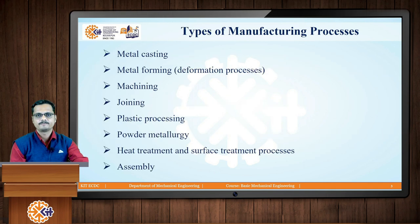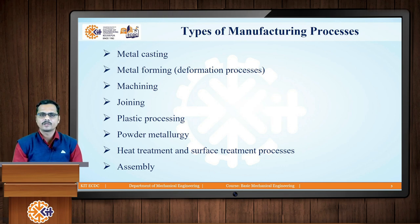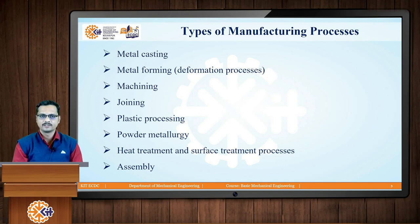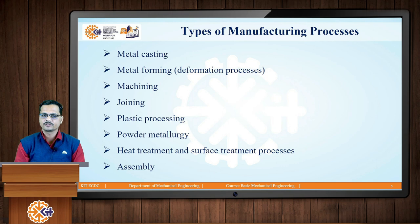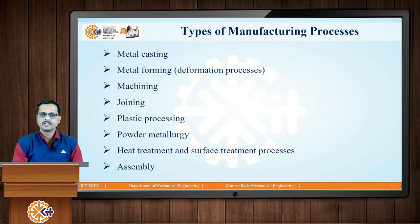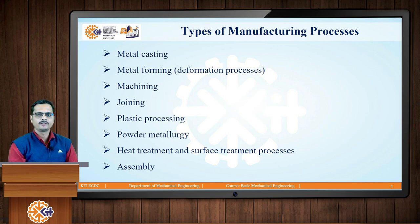After learning the definition and identifying the various elements of manufacturing, let us now learn the different types of manufacturing processes and how we can classify them. The various types of manufacturing processes listed on the screen are: first, metal casting; second, metal forming, also called material deformation processes; third, machining or metal cutting processes; fourth, material joining processes; next, plastic processing; then powder metallurgy, heat treatment, surface treatment processes; and finally, assembly.